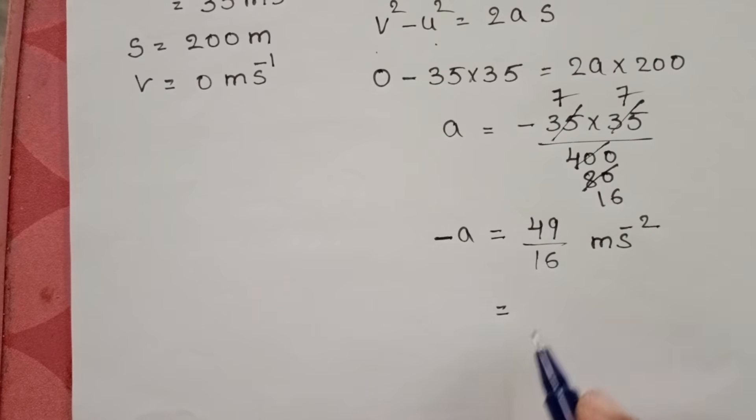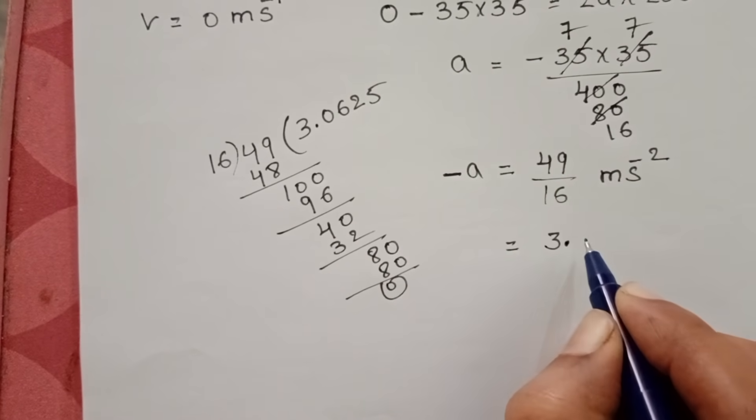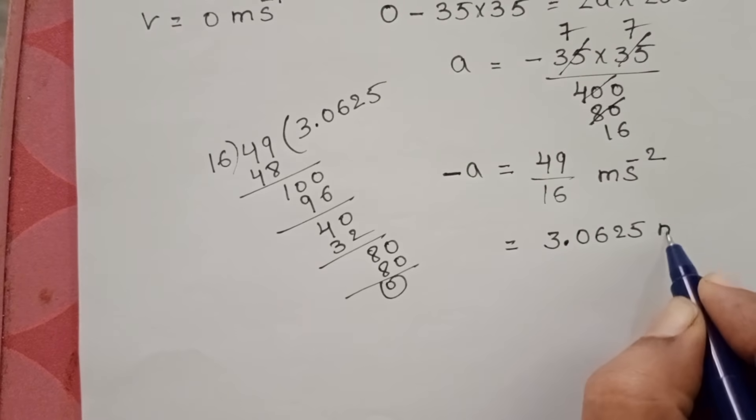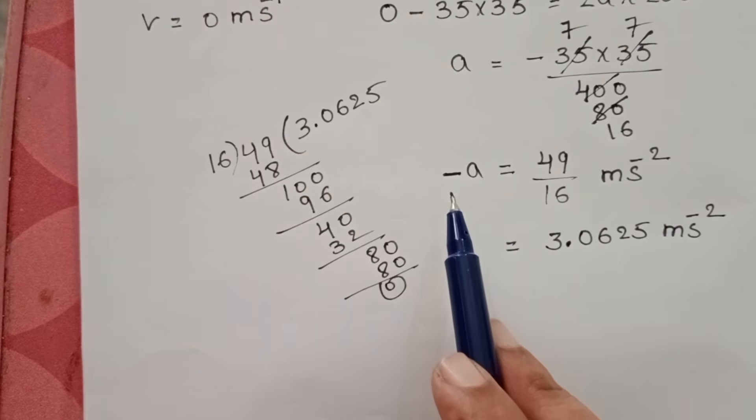Convert into decimal form. In decimal form, retardation value is 3.0625 meter per second squared. Here, the minus sign represents the retardation.